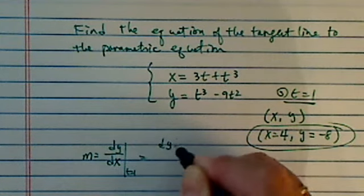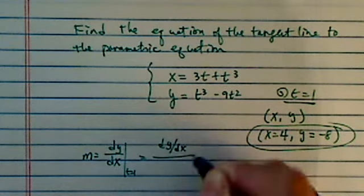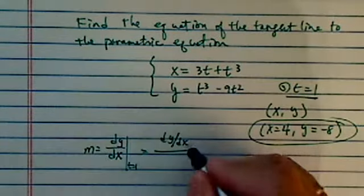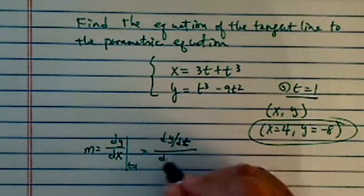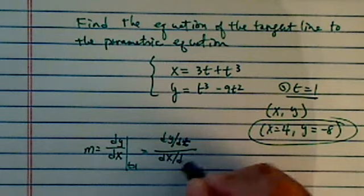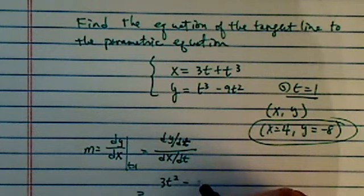But here, since we don't have x, y expressed in the same equation, we need to trick the system a little bit. We have dy dt over dx dt. So from there, dy dt is 3t squared minus 18t on top, and then I have a 3 plus 3t squared on the bottom.